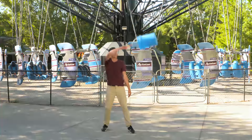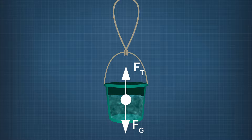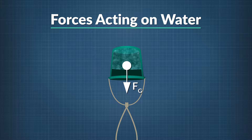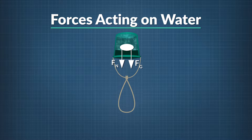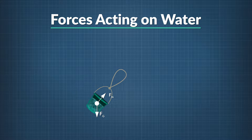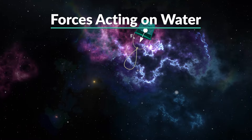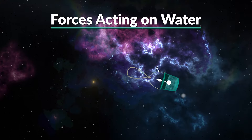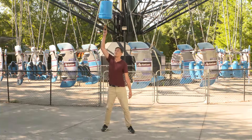What forces make up the centripetal force when the bucket is at the bottom of the loop? The tension force still acts towards the center, and gravity continues to act down toward the earth. What keeps the water in the bucket? It's the normal force of the bucket on the water's inertia. Tension keeps the bucket moving in a circle, and the normal force from the bottom of the bucket keeps the water moving in a circle. Even in the middle of space with no gravity, the water would still stay in the bucket thanks to the normal force. The tension of the rope keeps the bucket going in a circle.